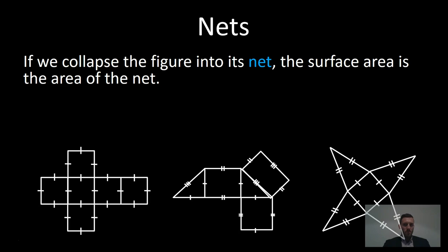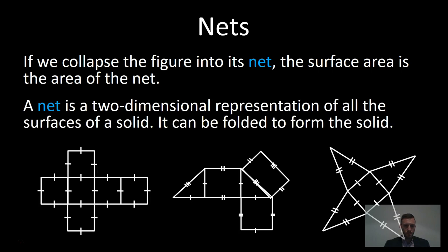The approximate surface area of the walls of an unpainted house, for example, could be calculated by looking at each wall separately and adding together the total surface area of each of the walls. Here we have three examples of nets. The first one is a cube, the second one is a triangular prism, and the last one is a pyramid.